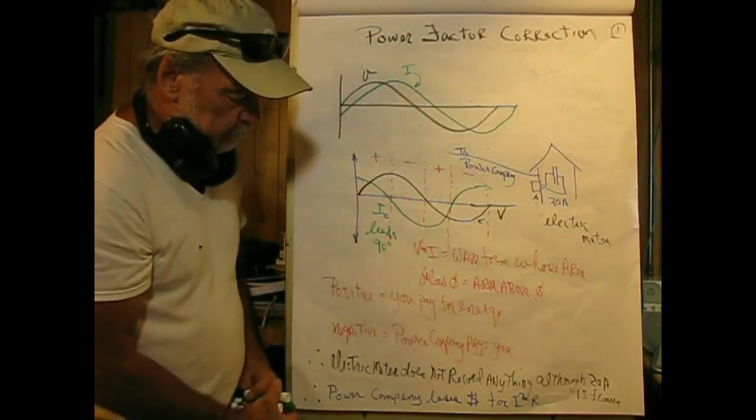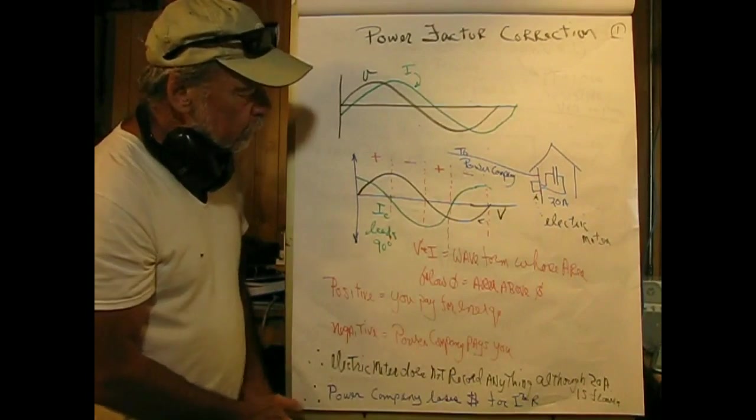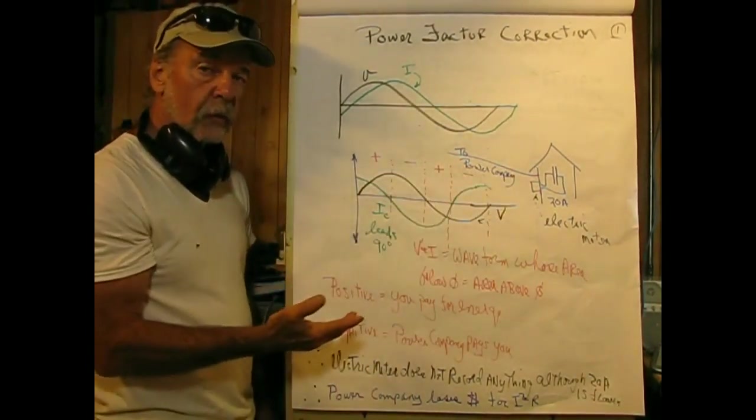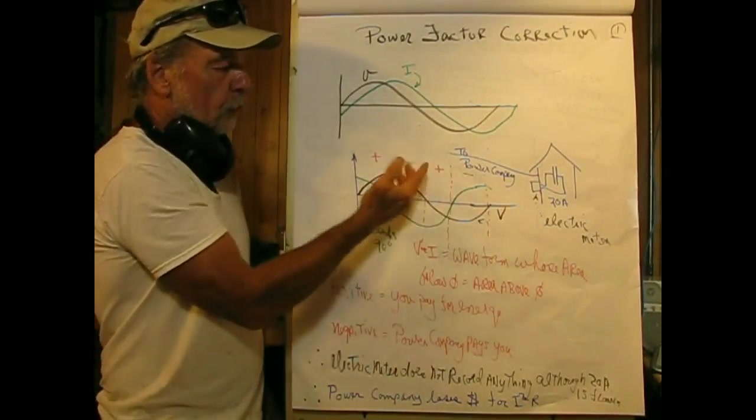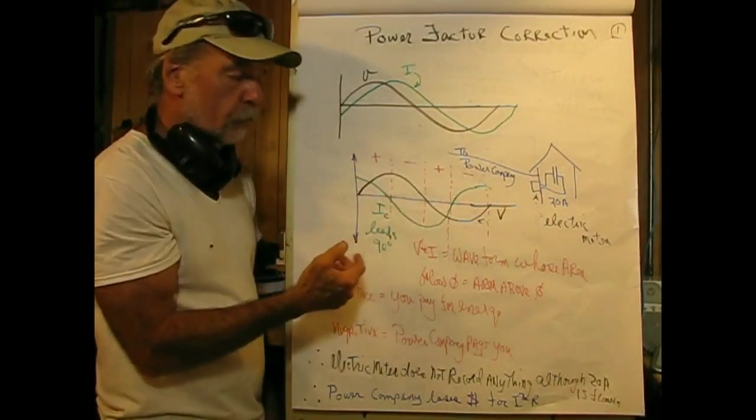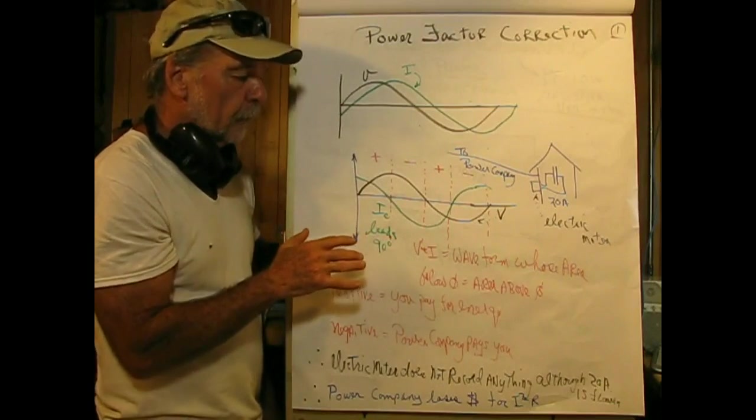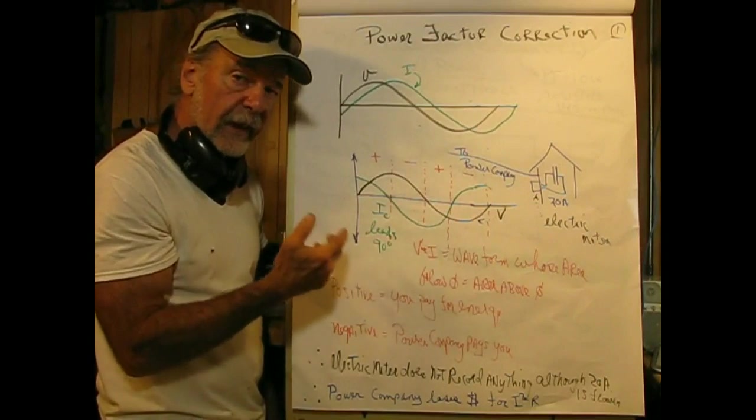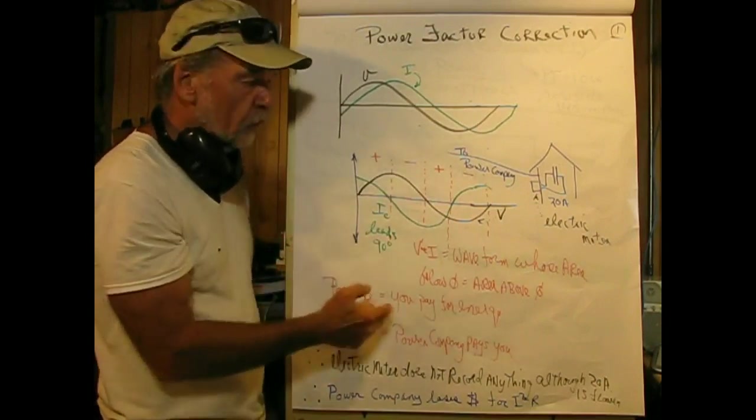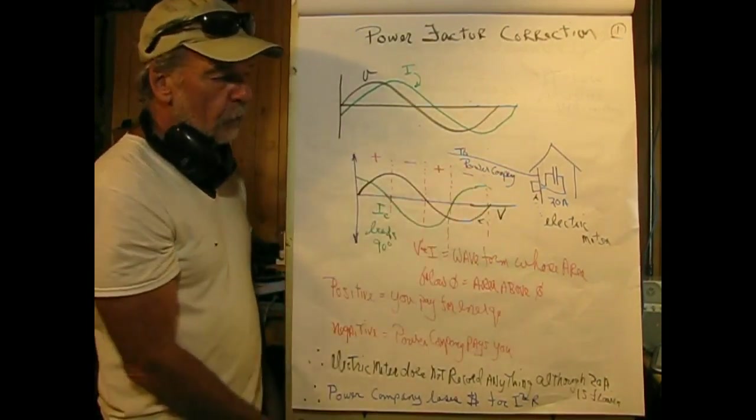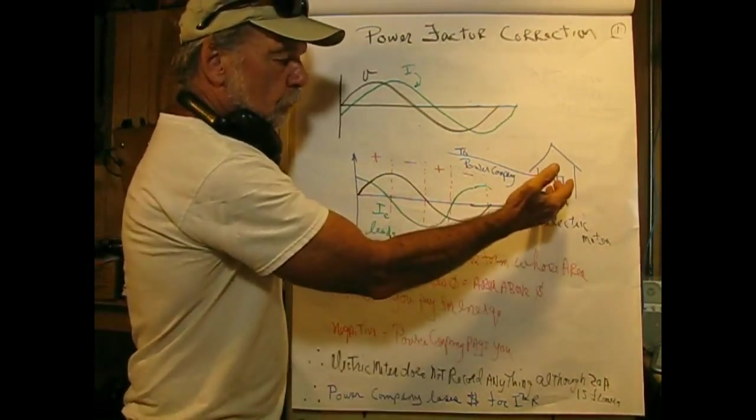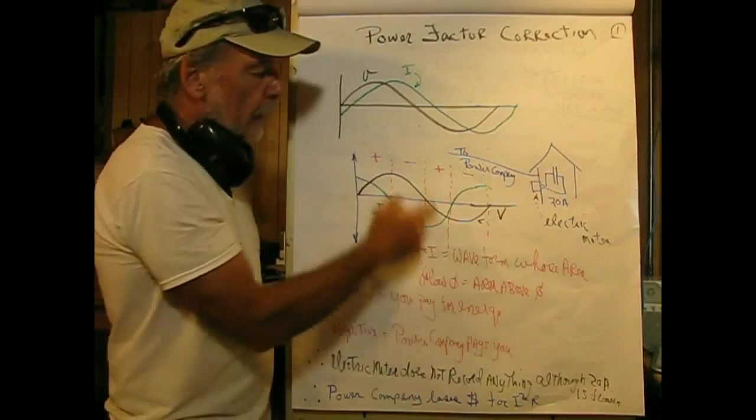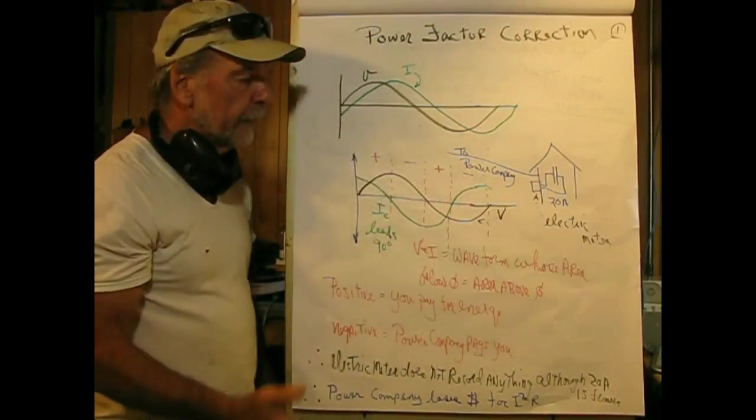The issue is that the electric company has their transmission facility that comes into our house through several transformers, and they have to eat or lose money on the I-squared R cost of the transmission facility. We're drawing 20 amperes, and it's costing the power company money.